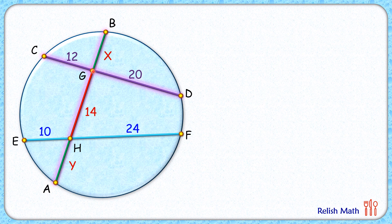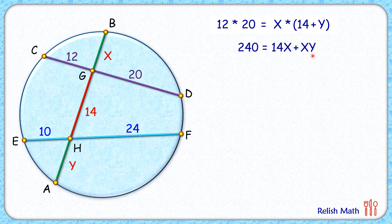So applying intersecting chord theorem, or power of point theorem, we get CG times DG equals BG times AG. So here, putting the values of CG and DG as 12 and 20, BG length is x and AG length is 14 plus y. So this is x times 14 plus y. Here, solving it, LHS will be 240 and RHS will be 14x plus xy.